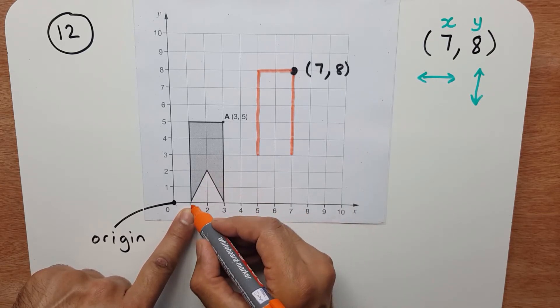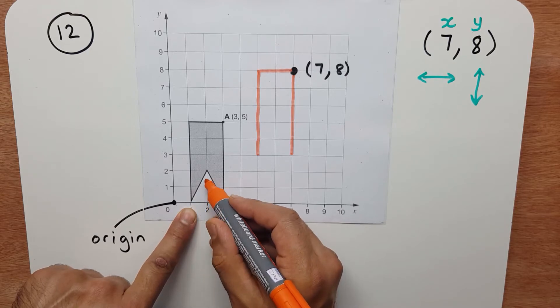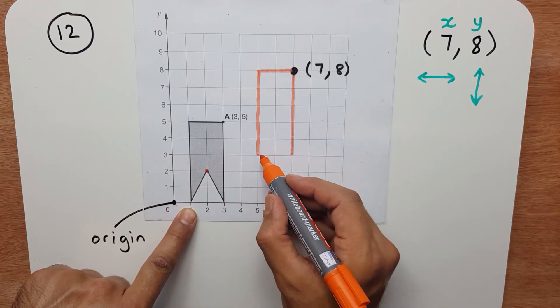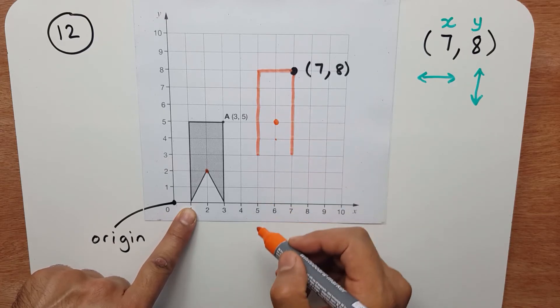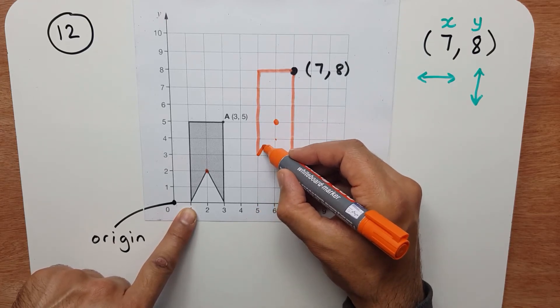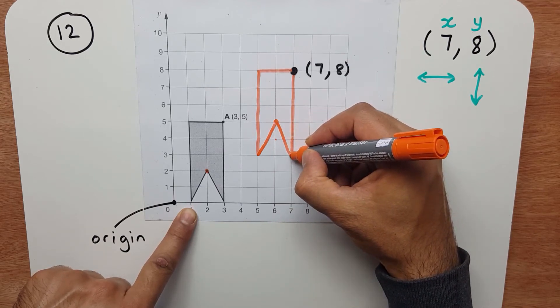Now how do I find this point? So I have to go 1 across and 2 up to make this point. So from here, I go 1 across and 1, 2 up, there you go. So I simply join this up, and to complete the shape, I join that up.